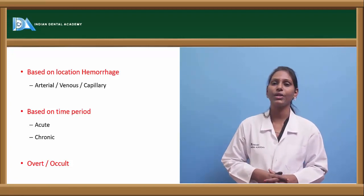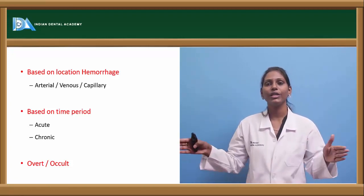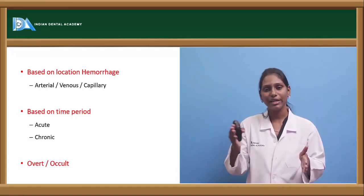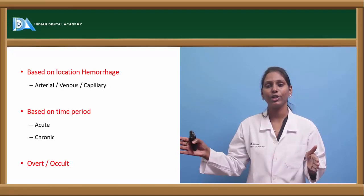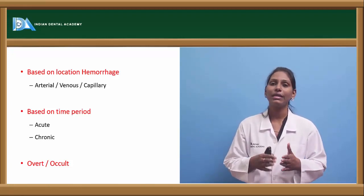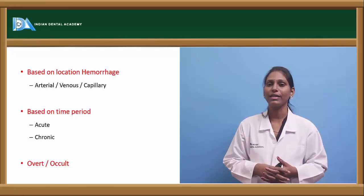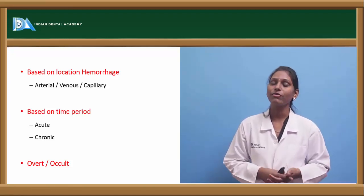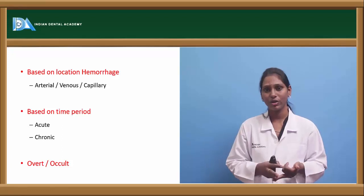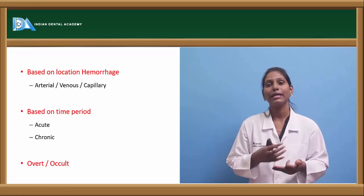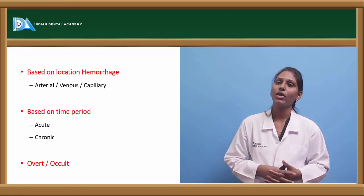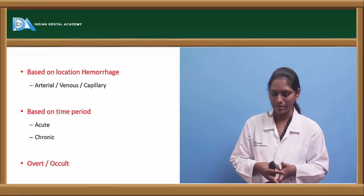Chronic hemorrhage is continuous or occasional blood loss over a period of more than three weeks to three months. Examples include peptic ulcers, hemorrhoids, varicose veins, and esophageal varices where hematemesis can also be seen — all considered chronic hemorrhage or chronic blood loss conditions.